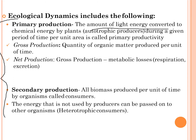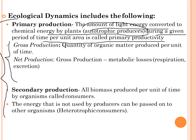Primary production is the amount of light energy converted to chemical energy by plants, which are the autotrophs, during a given period of time per unit area. Under primary production we have gross and net production. Gross production is the quantity of organic matter produced per unit of time. Net production is the gross production minus metabolic losses through respiration and excretion.